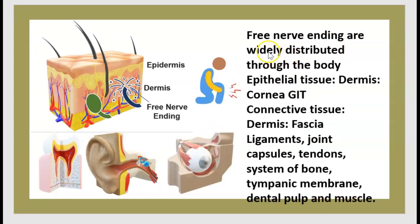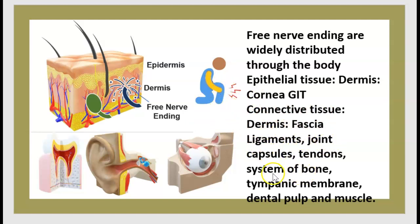Free nerve endings are widely distributed through the body — in epithelial tissue, dermis, cornea, connective tissue, ligament, joint capsule, tendons, tympanic membrane, dental pulp, and muscle.